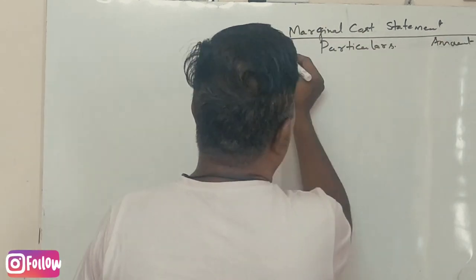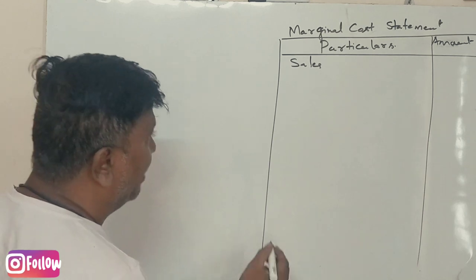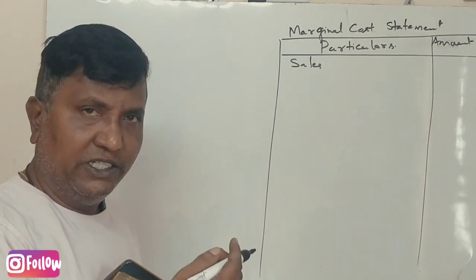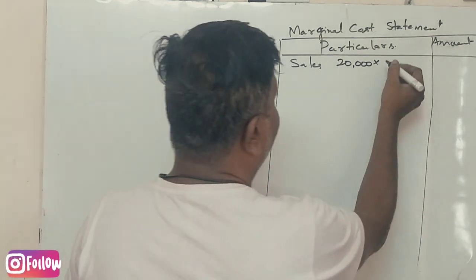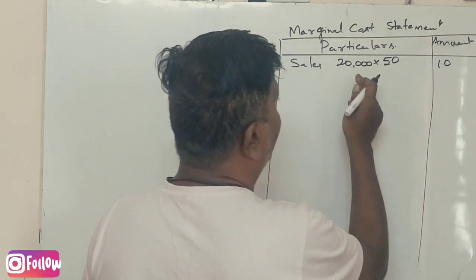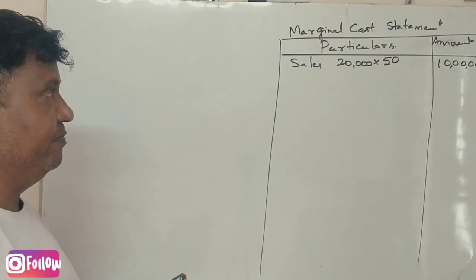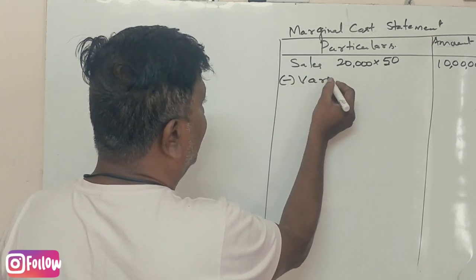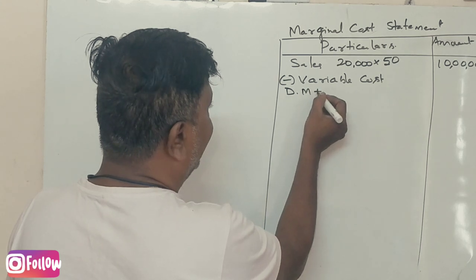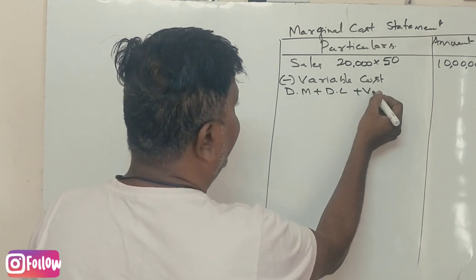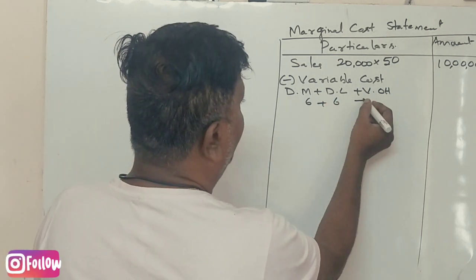This is how you practice this statement — it's easy. First, you record the sales. Then you list the variable costs. As given, direct material is ₹6 per unit, direct labor is ₹6 per unit, and variable overheads is ₹3 per unit.